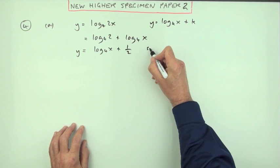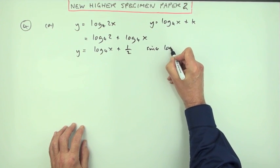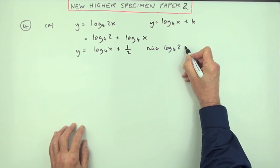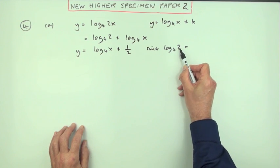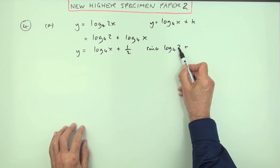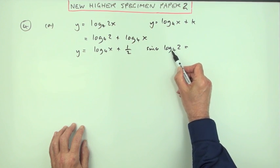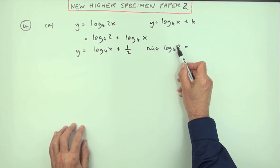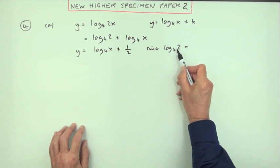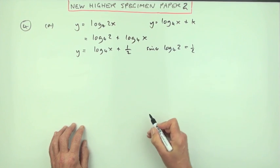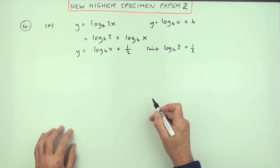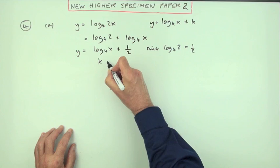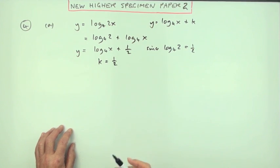Rearrange so y equals log base 4 of x plus log base 4 of 2. But log base 4 of 2 is a half, since what power of 4 gives 2 is power a half. It did say stating the value of k, so k equals a half.